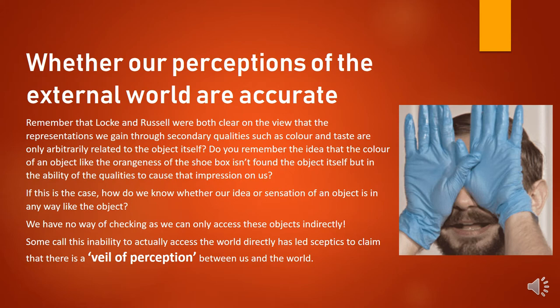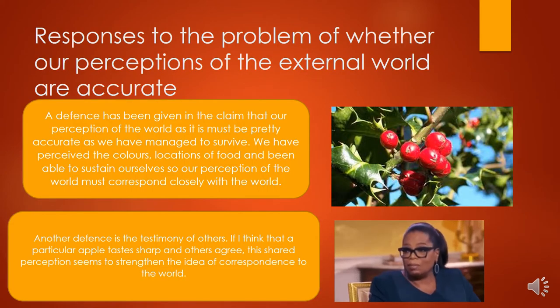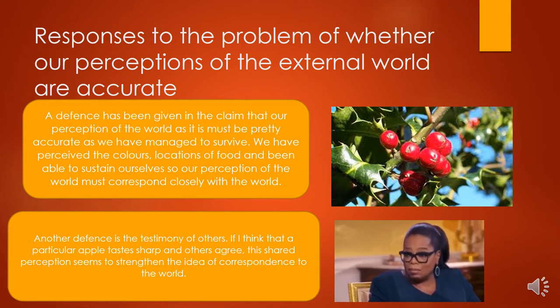Look where indirect realism has led us — to an inability to access the world directly. This has led sceptics to claim that there is a veil of perception between us and the world. There's something in between us that's stopping any kind of direct knowledge of the world. So that's the situation we're facing with indirect realism: that we can't know anything accurate about an external world.